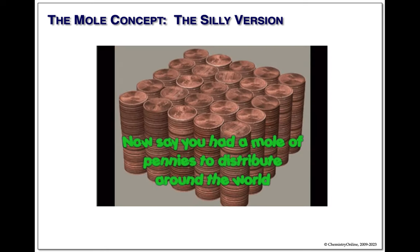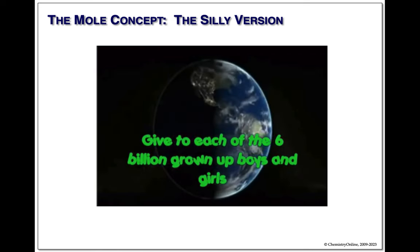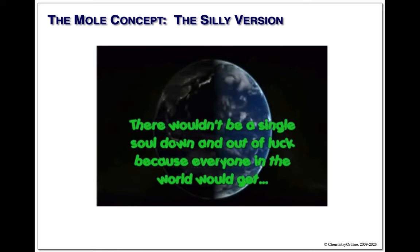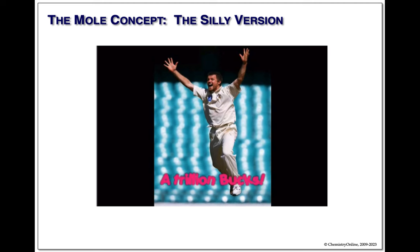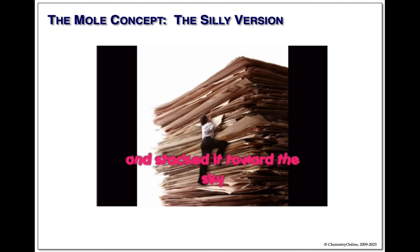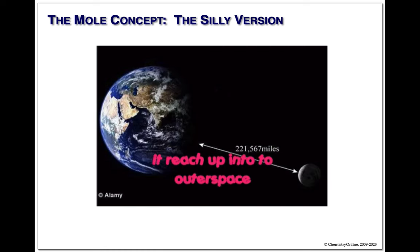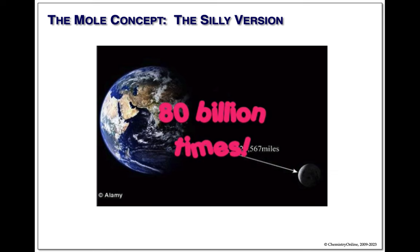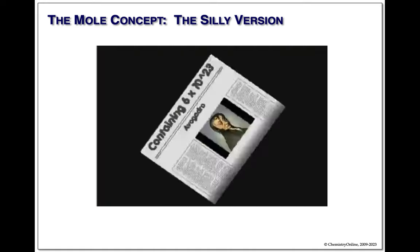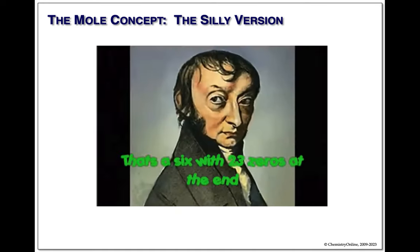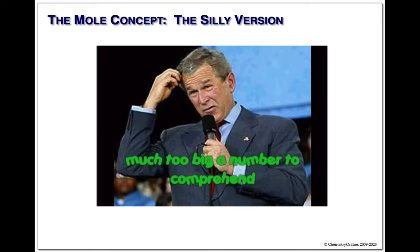Now say you had a mole of pennies to distribute around the world — give to each of the 5 billion people, boys and girls. There wouldn't be a single soul down and out of luck, because everybody in the world would get a trillion bucks. Or say you had a mole of paper stacked toward the sky — paper's a whole thin, but that pile would get so high it'd reach into outer space. In fact, it'd go up to the moon and back 80 billion times. A mole is a unit containing 6 times 10 to the 23rd — much too big a number to comprehend.